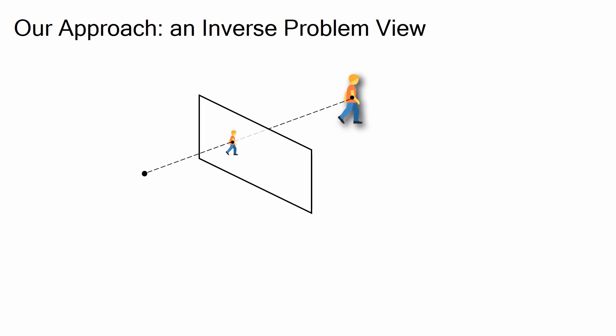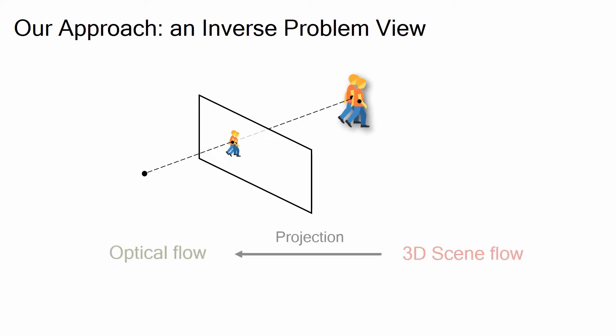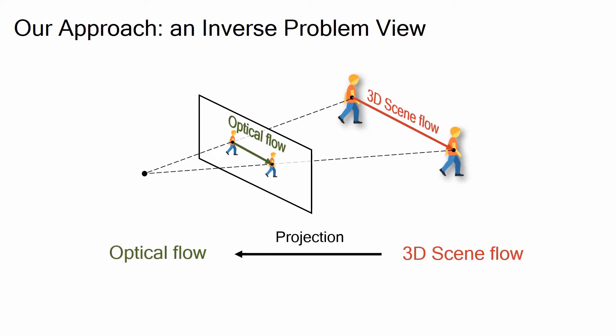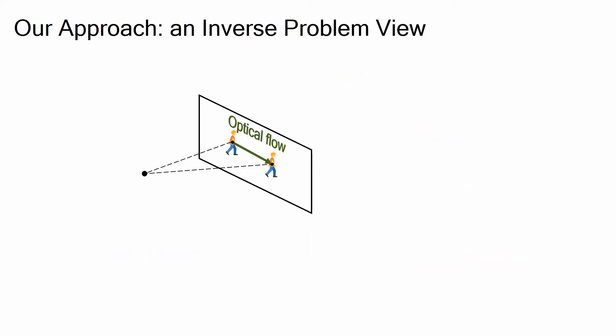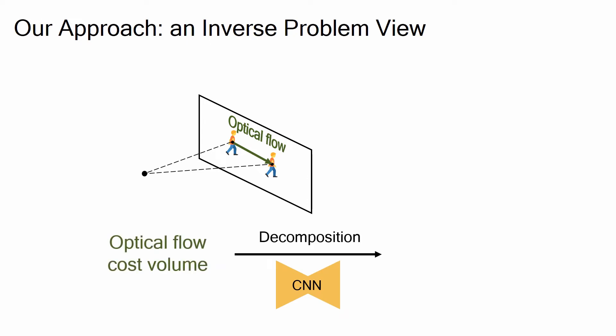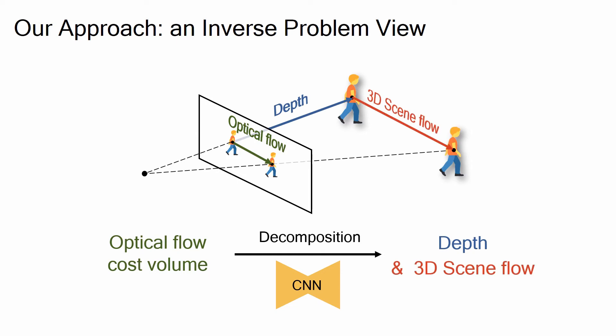To solve this highly ill-posed problem, we take an inverse problem view. Our starting point is that optical flow is the 2D projection of 3D scene flow. By taking an inverse view, we design a single convolutional neural network that decomposes a 2D optical flow cost volume into 3D points and their 3D scene flow simultaneously.